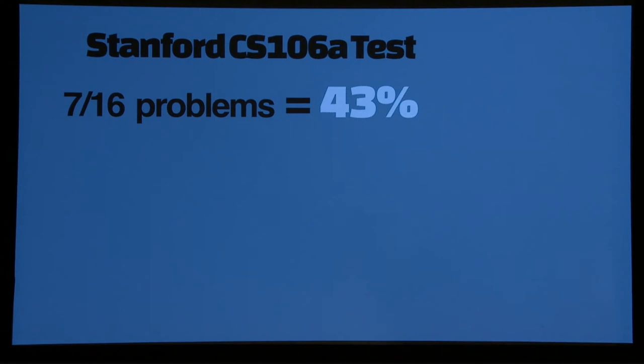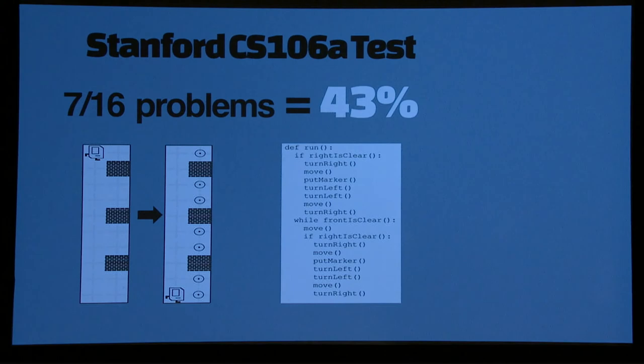Then finally, the real test was actually how does this do when we go to the class test? We took 16 problems from last year's class test, and it got 43 percent, which was kind of surprising. I was expecting zero percent. So this was interesting. It was able to do something, and this was one of the class test problems where students were given these inputs and outputs. This was the program that was written by our system, which is quite sophisticated. It's almost 15, 16 lines.